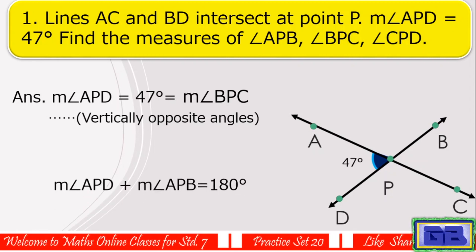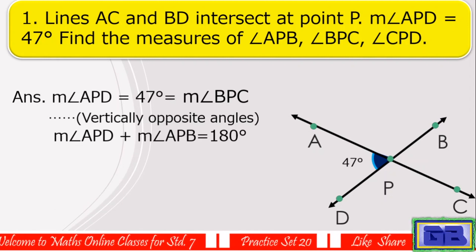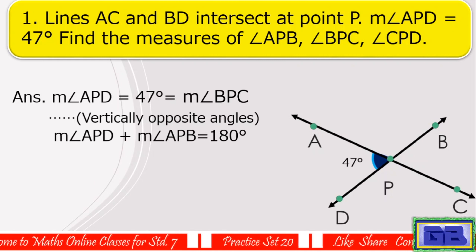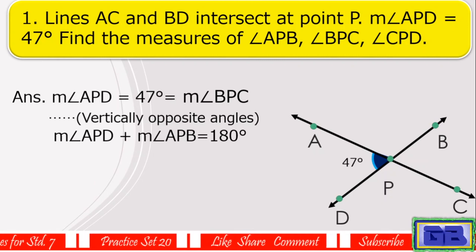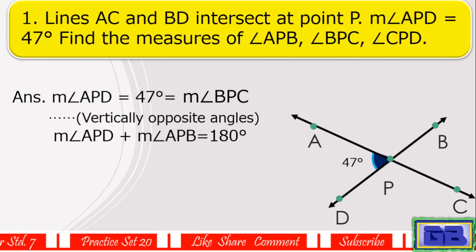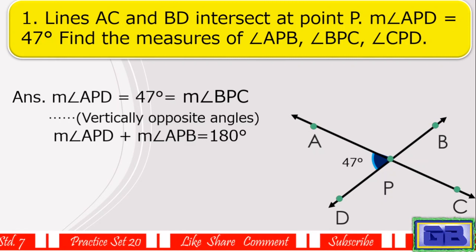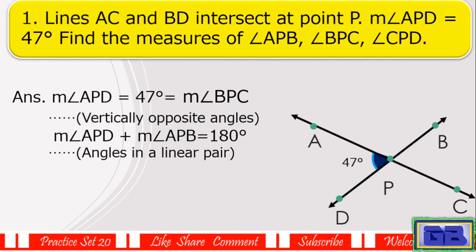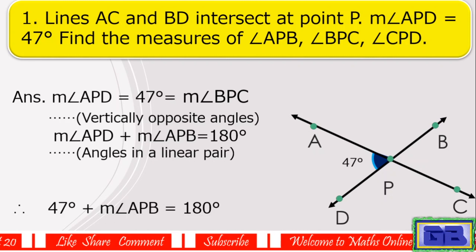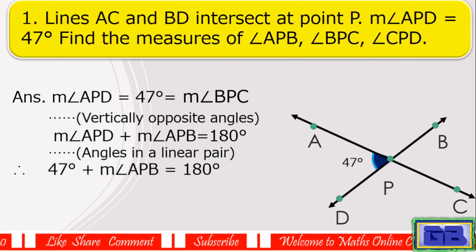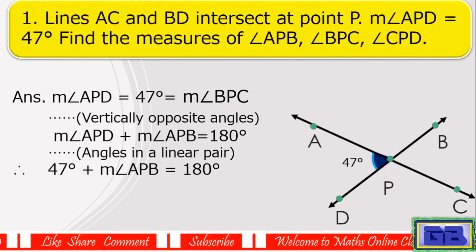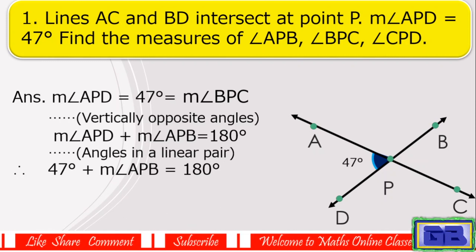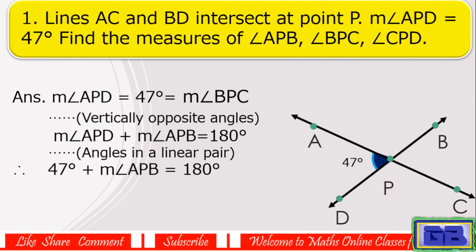Measure of angle APD plus measure of angle APB equals 180 degrees, as these are angles in a linear pair. Therefore, 47 degrees plus measure of angle APB equals 180 degrees.